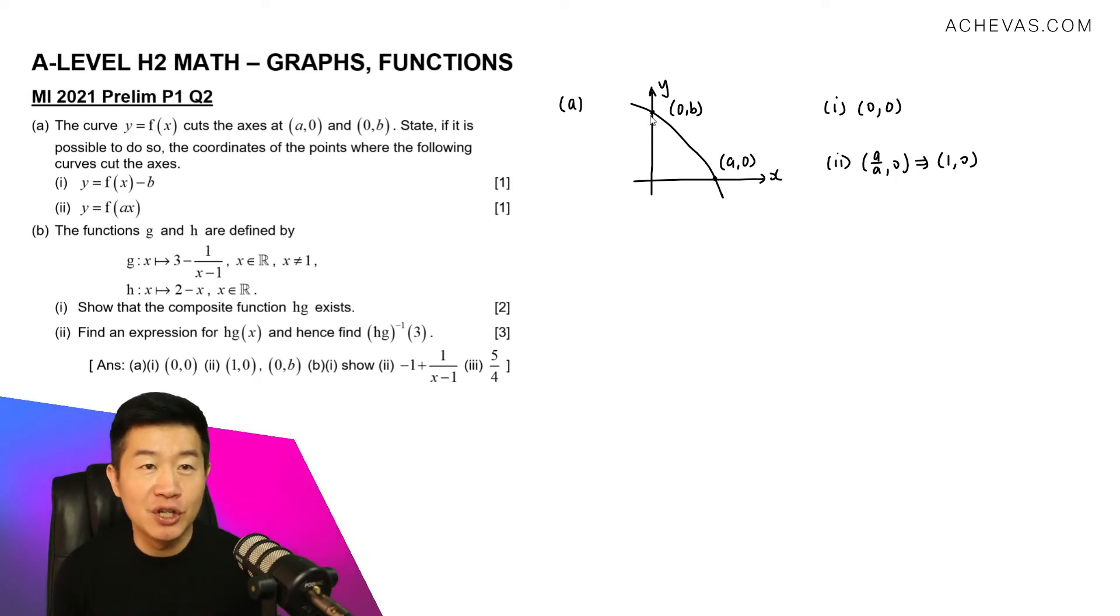As for the y-intercept, there's no change to it because the original y coordinate here is going to be 0. 0 divided by a is going to be 0. So the y-intercept will remain at (0,B).